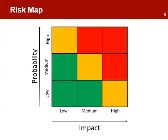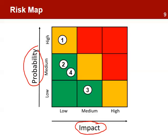Once all the risks have been identified and their levels of probability and impact qualified, the project manager can use that information to create a simple risk map that will help visualize all the risks in the project. The risk map is a 3x3 grid. On the horizontal axis are the values for impact, and on the vertical axis are the values for probability. In this example, one can see that most of the risks are in the low risk area, but there are two risks in the high area that will require special attention.